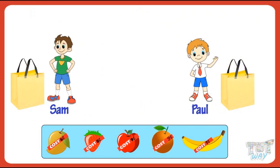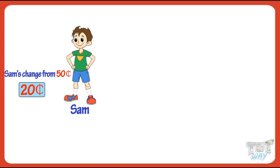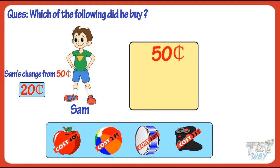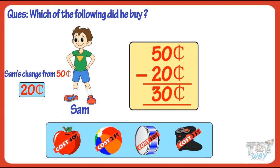Let's take another example. Here is Sam's change with 50 cents — which of the following did he buy? Sam had 50 cents and his change now is 20 cents. So first, calculate what he spent by subtracting the smaller amount from the bigger amount: 50 cents minus 20 cents, we get 30 cents. So Sam spent 30 cents.